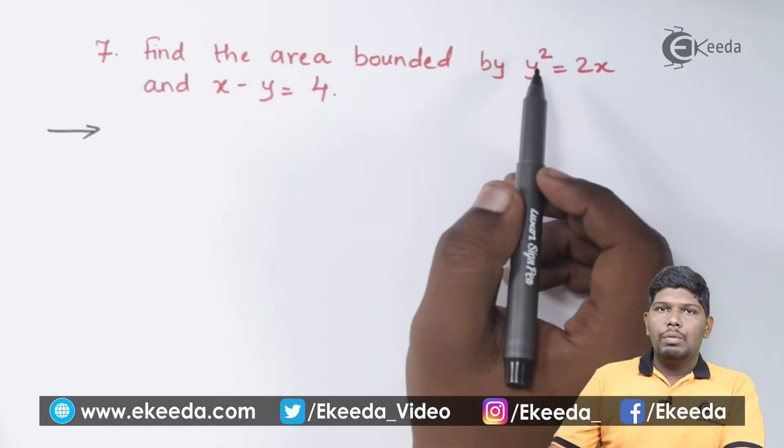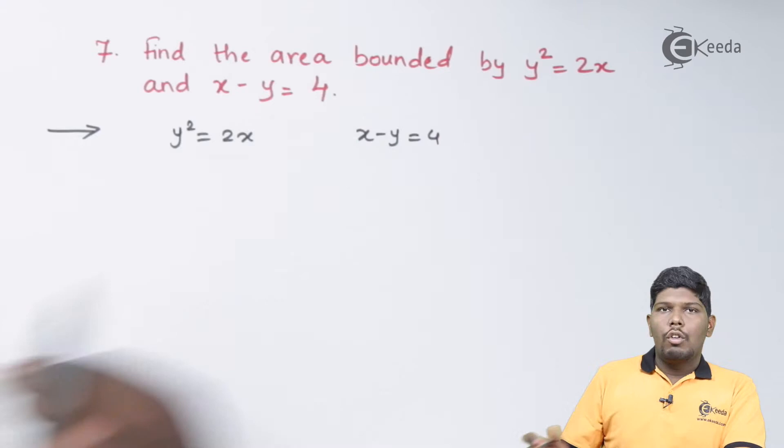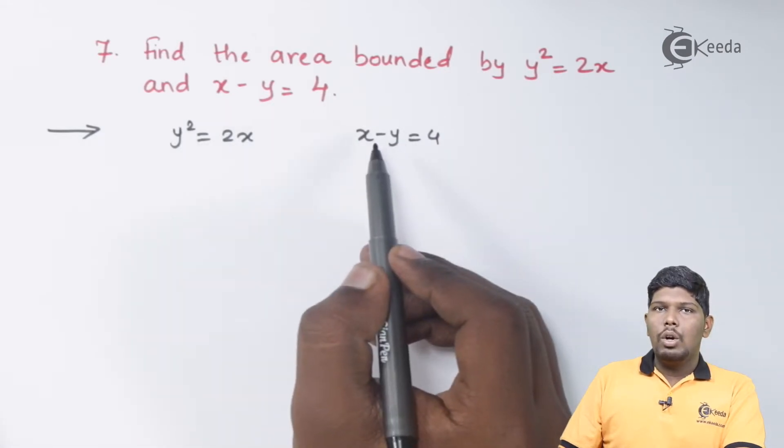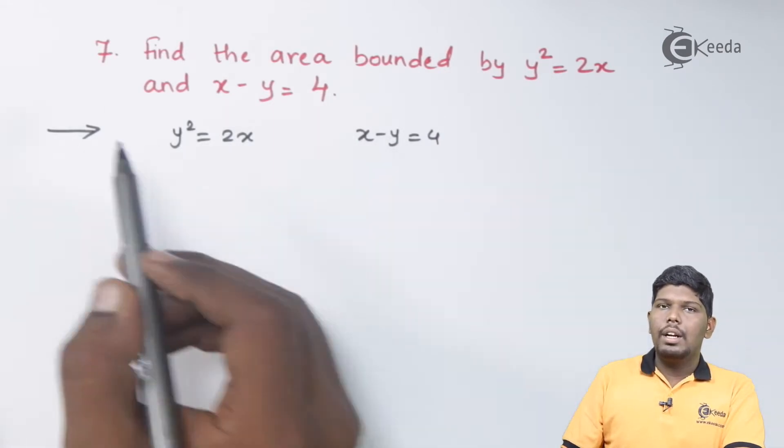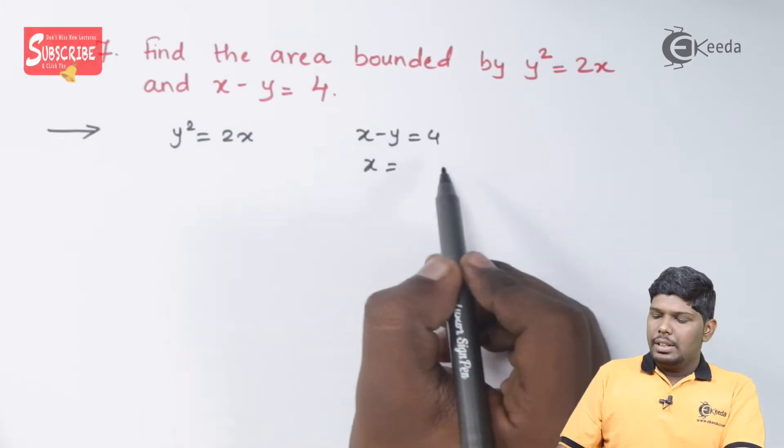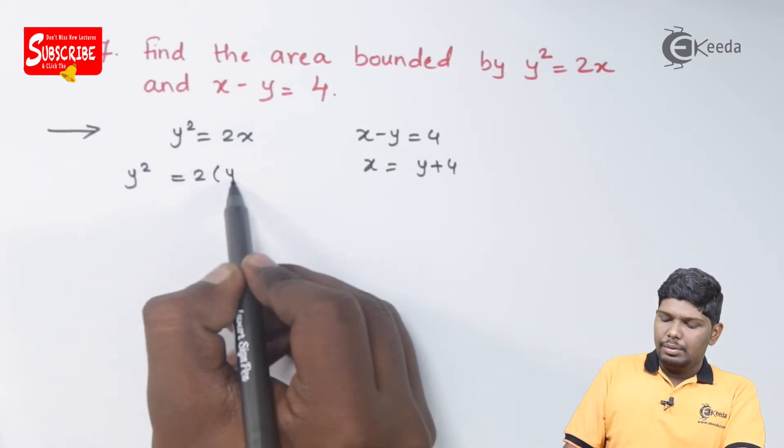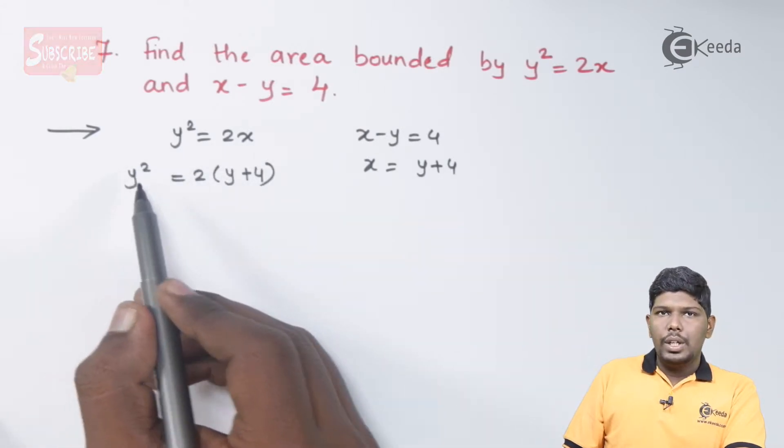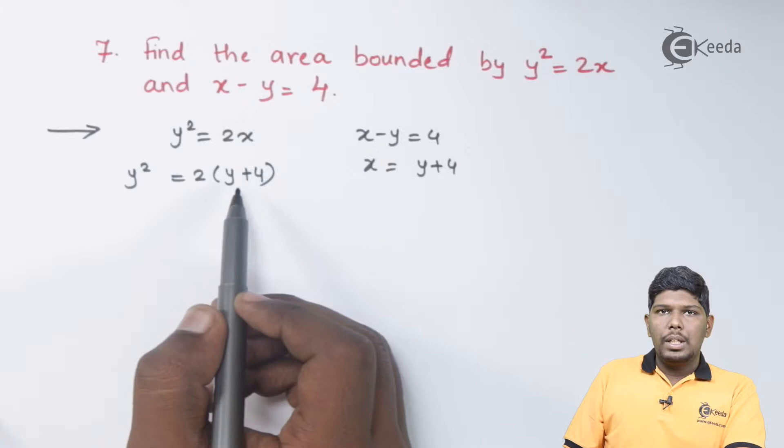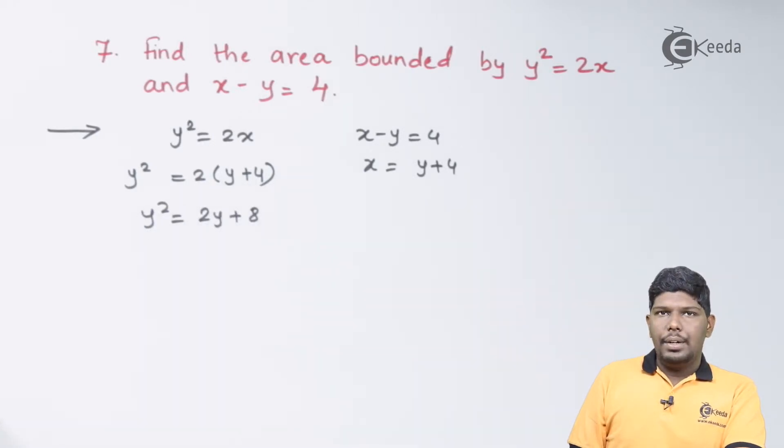Let us find the point of intersection of these two curves. From the second equation we can get the value of x or y and substitute in the first equation. The value of x here is y + 4. So this will give you y² = 2(y + 4). That is y² = 2y + 8.